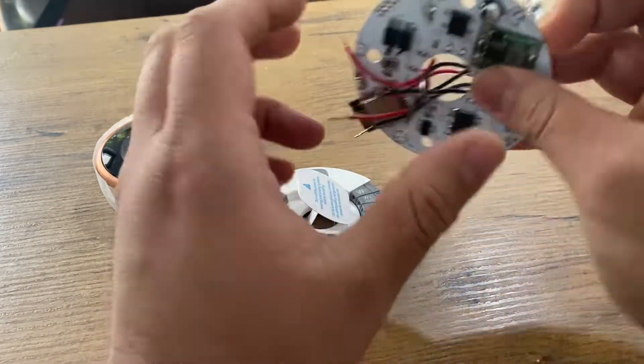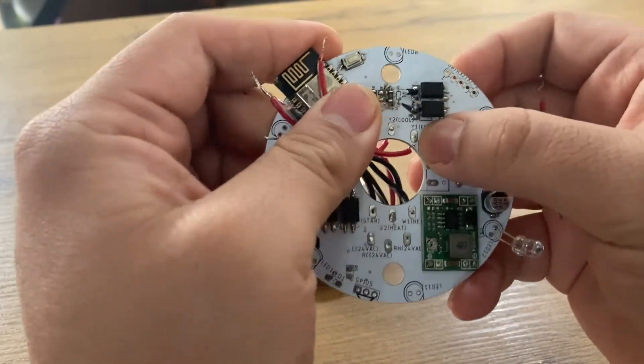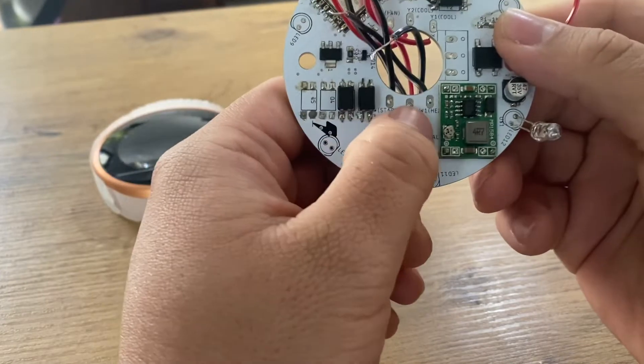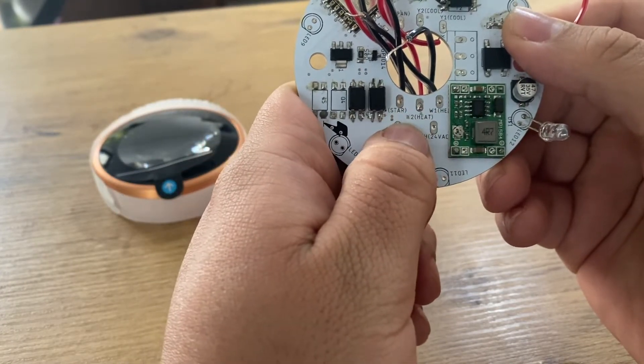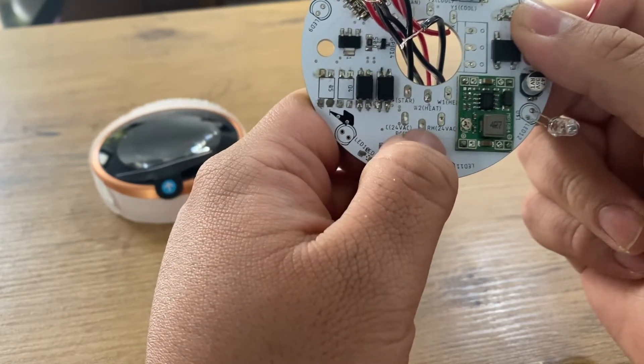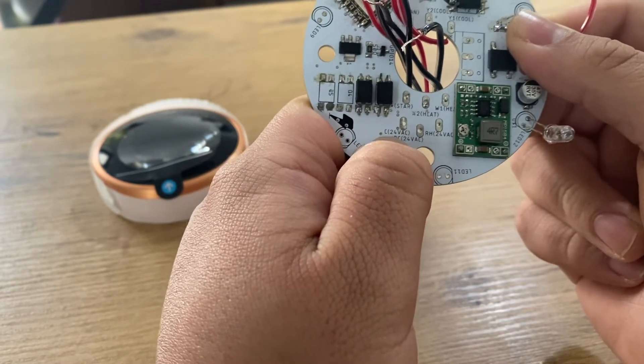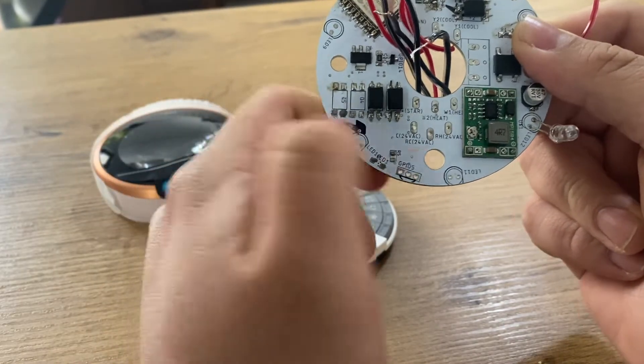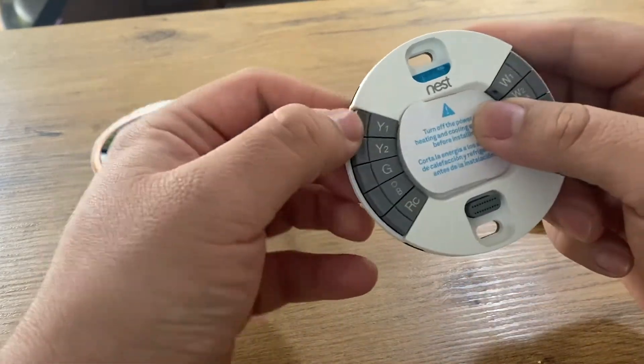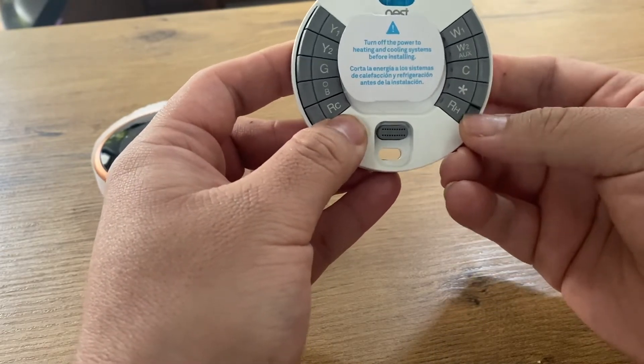So what are the wires that are exposed here? You will see some legends here. For instance, you have the Y1, Y2, both of them are stages for cooling. You will have the W1, which is heat, and W2, which is also the second stage for heating. You will also have the C, RC, and RH, which is common, and this is the main line for Korean. Those are the letters you will find them here: Y1, Y2, Y1, Y2, the C for common, the RH and RC.